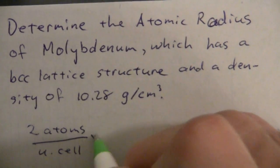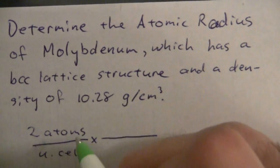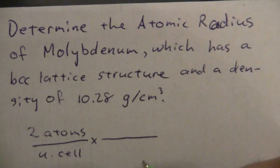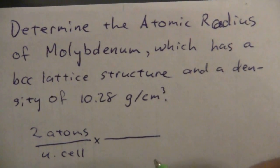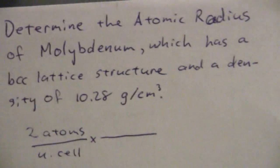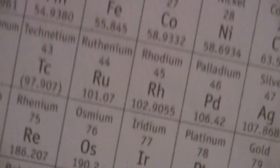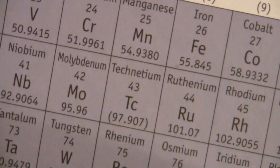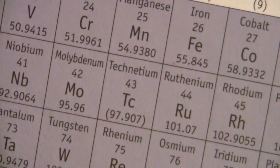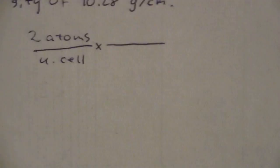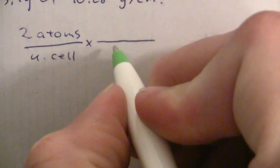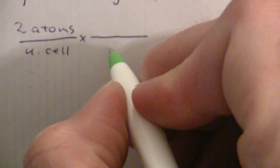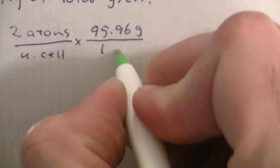What is my mass of those two atoms? Well I can look at the periodic table and find molybdenum. Here is molybdenum, 95.96 grams per mole. So 95.96 grams to one mole.